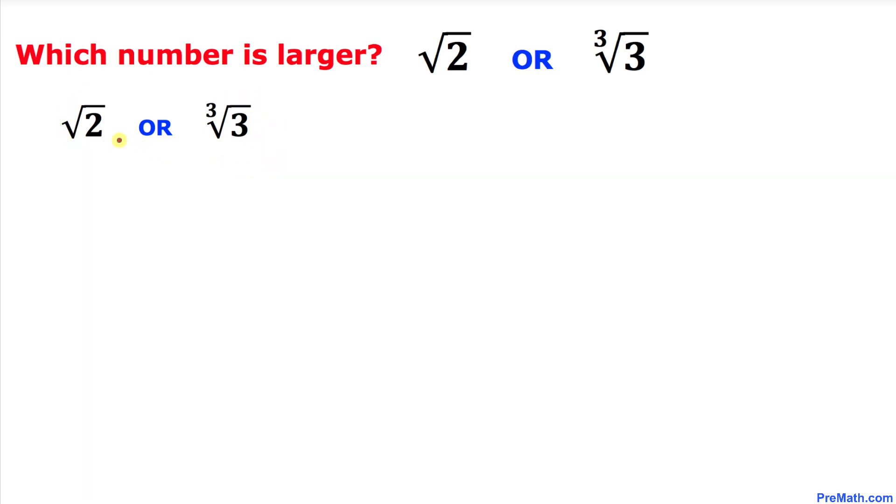As you can see, these numbers are in radical notation and we want to convert them into exponential form. Here we are going to use this rule: if we have this radical form where this index